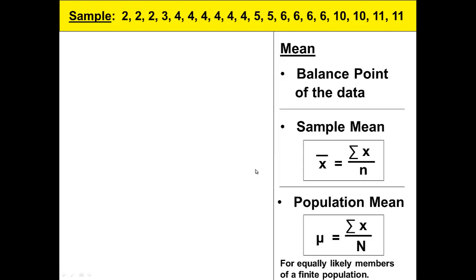For both sample mean and population mean, this is not for cases like where one grade counts a higher percentage. Where one test counts twice or 30% and another one only counts 15%. This is for equally likely members in a finite population.